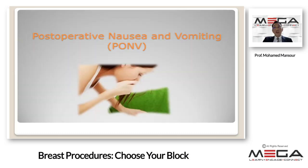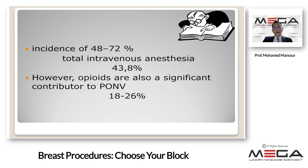Patients undergoing breast surgery have a reported postoperative nausea and vomiting incidence of 48% to 72% with general inhalational anesthesia. Interestingly, switching to total intravenous anesthesia only decreased this to 43.8%. Opioids are also a significant contributor to PONV, and opioid reduction results in decreased adverse reactions. Paravertebral block has been associated with an 18 to 26% decrease in postoperative nausea and vomiting.